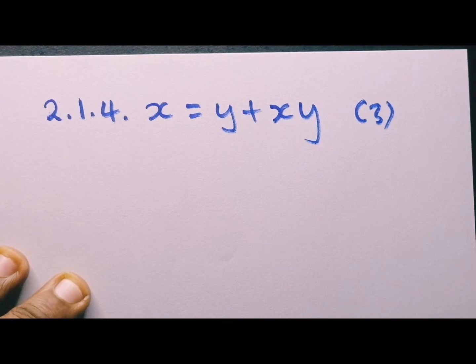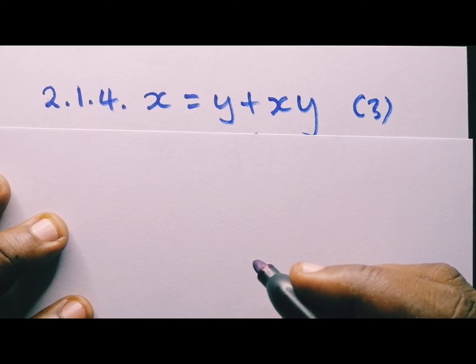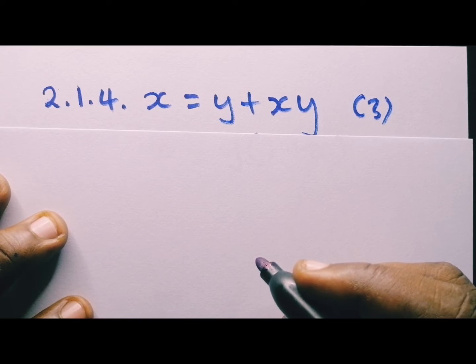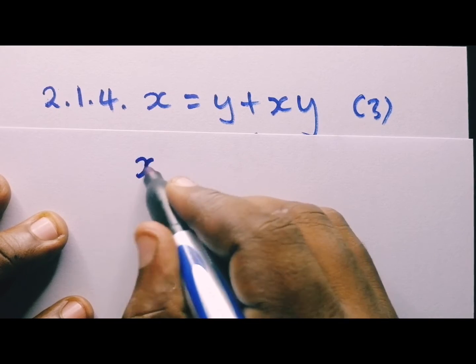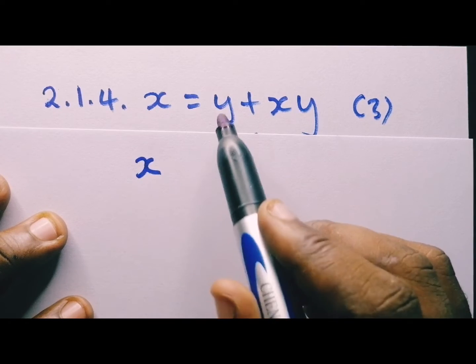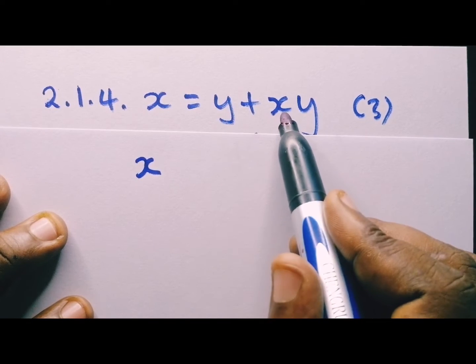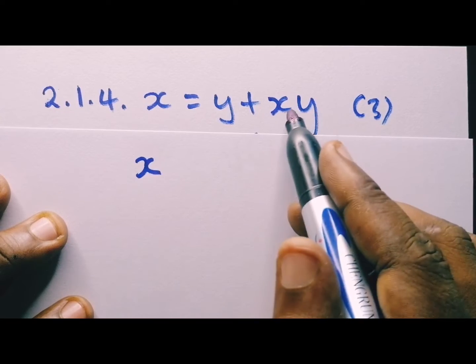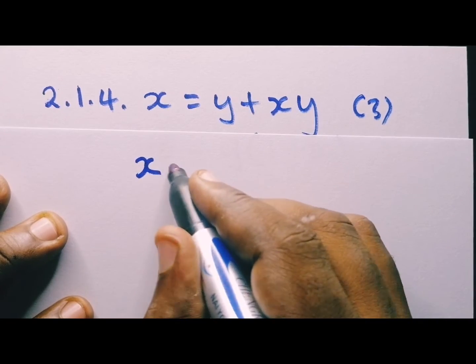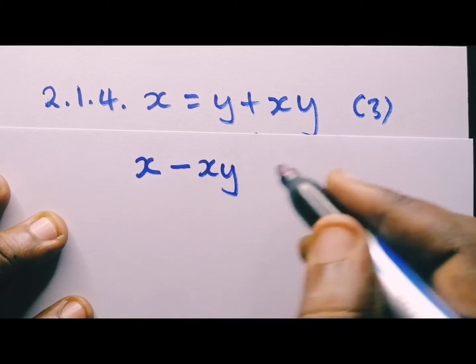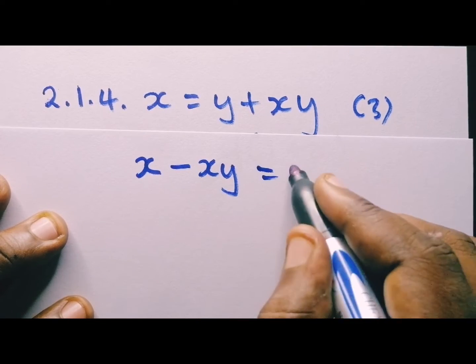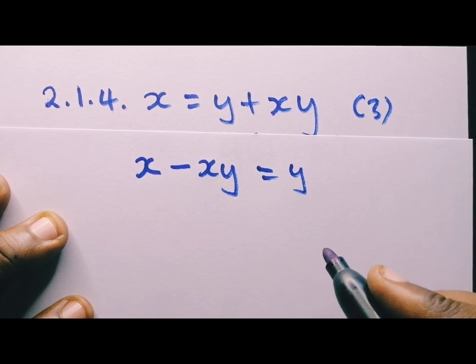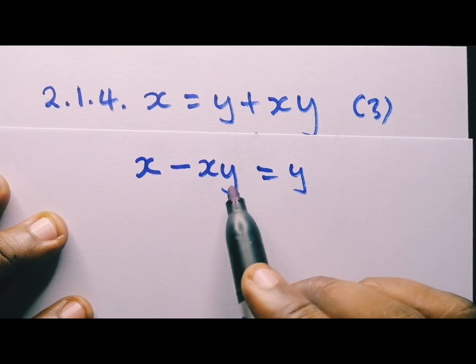2.1.4, remember we are still solving for x. In other words, make x the subject of the formula. So we have x. As you can see here, we do not have x here, but we do have x here. Why don't we collect these terms? We have x, y. Remember, we took this to the other side, a sign changed, equal to y.